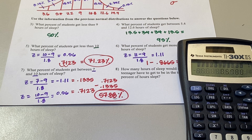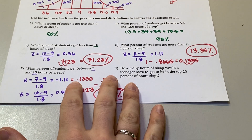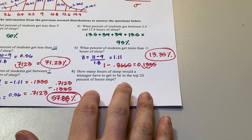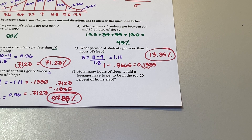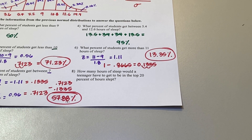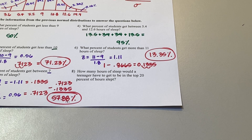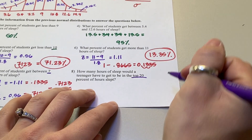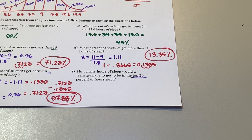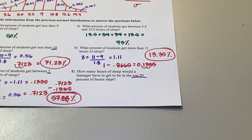Last problem — a challenge. Number eight: how many hours of sleep would a teenager have to get to be in the top 20% of hours slept? We're looking for a number of hours, not a percentage. If you're in the top 20%, you're sleeping more than 80% of other students. So we need to find 80% on our chart — and we're going backwards this time.